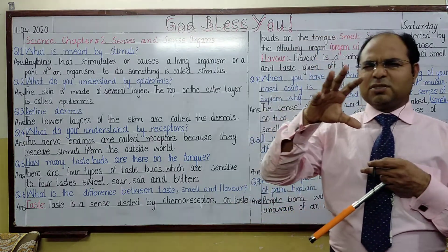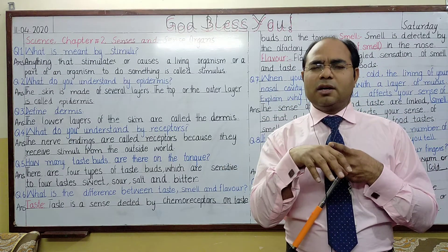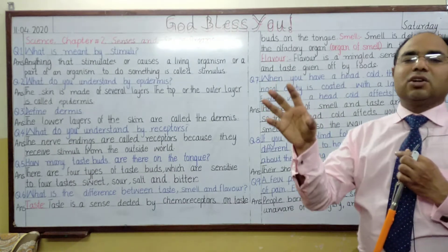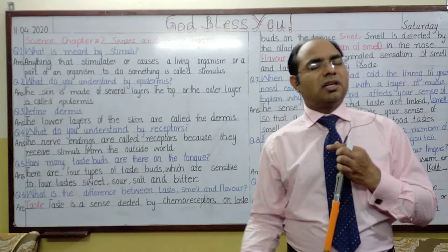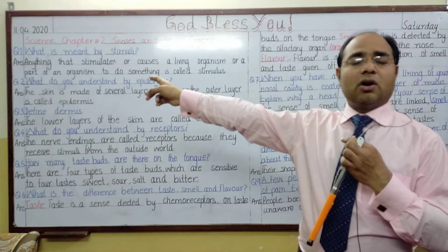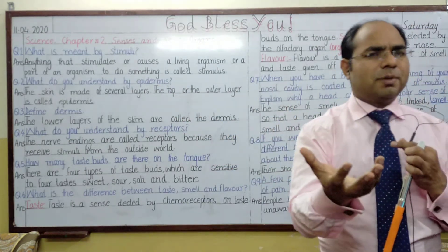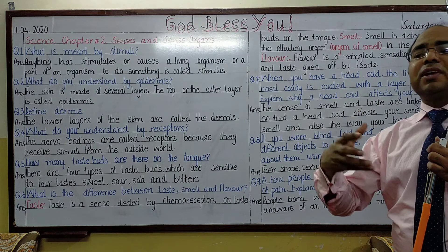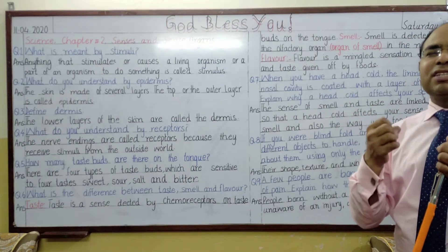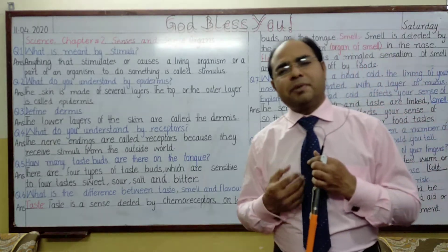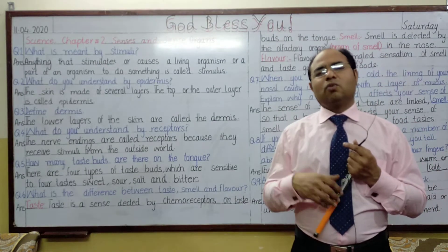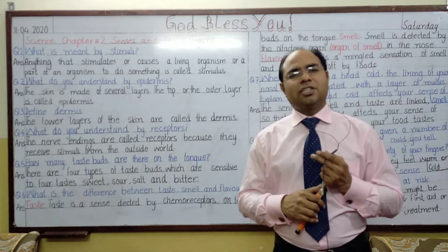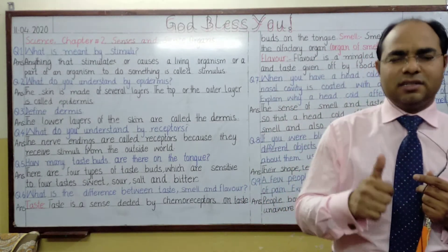So I hope you understood from this lecture: the outer layer of the skin is called epidermis, the lower layers are called dermis, factors that stimulate parts of a body or organism are known as stimuli or stimulus, and there are four types of taste buds on the tongue — sweet, sour, bitter, and salty. We can also differentiate objects when blindfolded using our other senses. I hope you all are fine — God bless you, thank you for watching, and I hope you benefited.